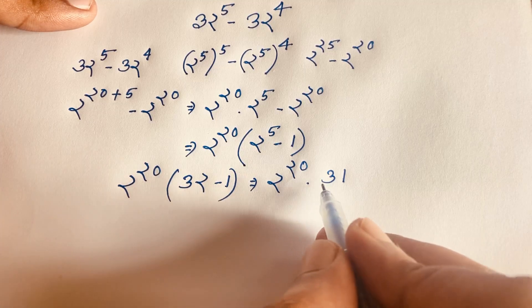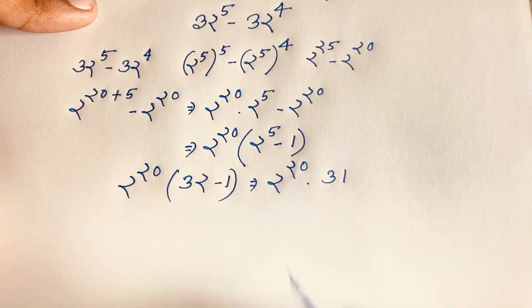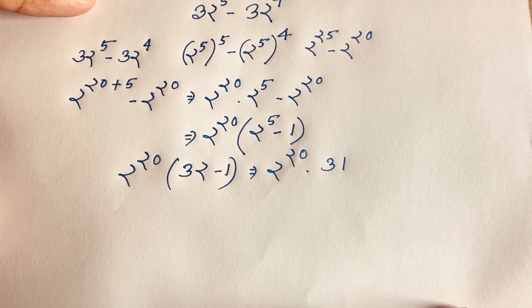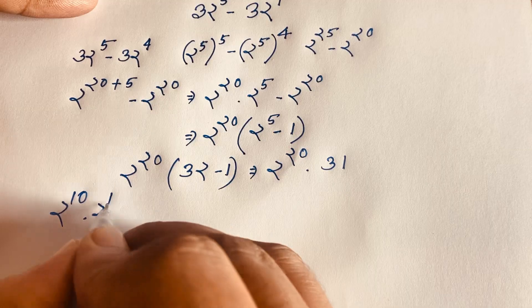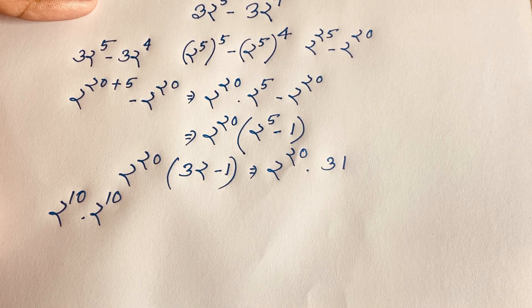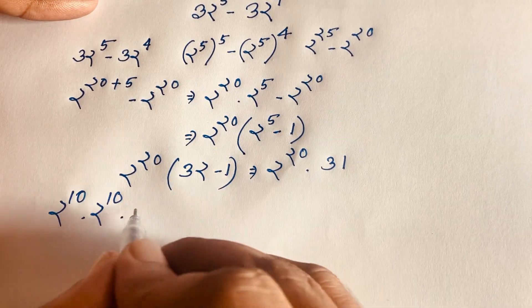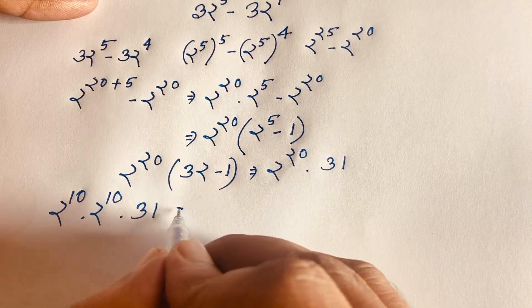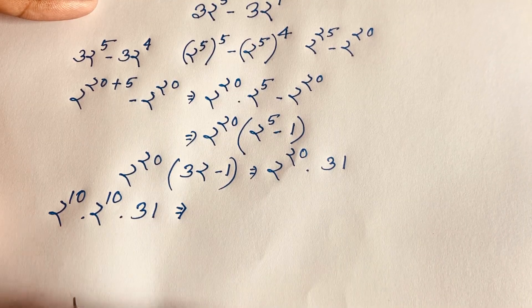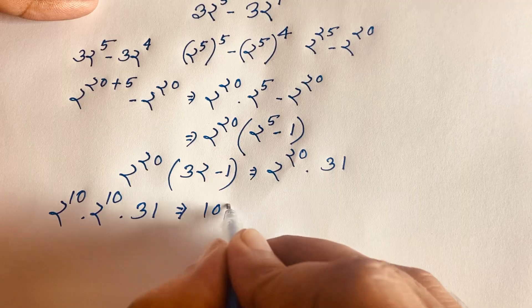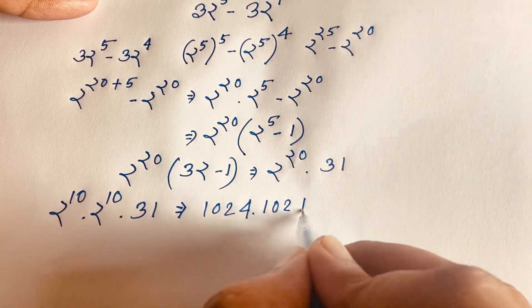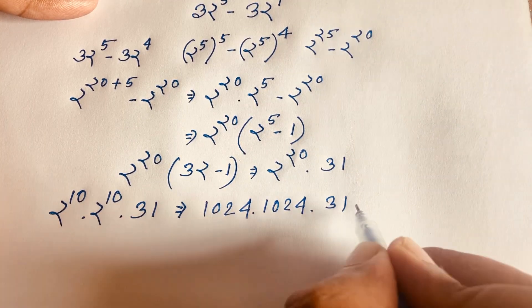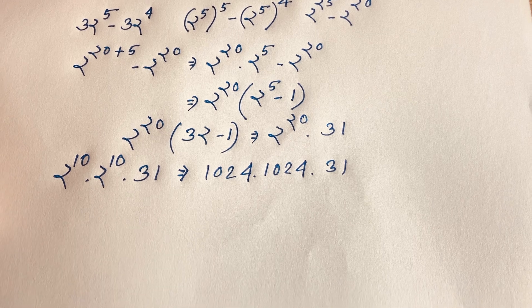Now, 2²⁰ equals 2¹⁰ times 2¹⁰, because 10 plus 10 equals 20. We know that 2¹⁰ equals 1024, so 2²⁰ equals 1024 times 1024. The full expression is 1024 times 1024 times 31.